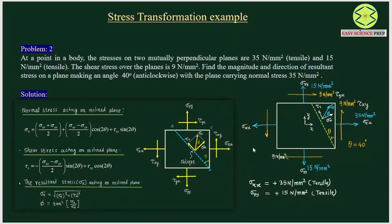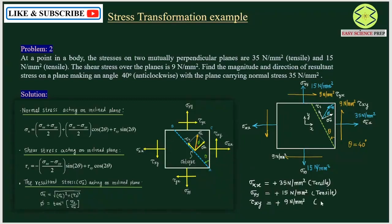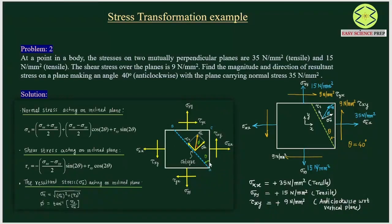Now for shear stress: in the given situation they have not mentioned anything about the direction, so we will always take the direction of shear stress the same as the standard situation. We have taken it as acting on the vertical plane in the anticlockwise sense, which rotates the element anticlockwise. Here also we have taken the same, so tau_xy is positive with value 9 N per mm². The inclined plane makes an anticlockwise angle theta with the vertical plane in both the standard and given situations, so theta is positive — plus 40 degrees.